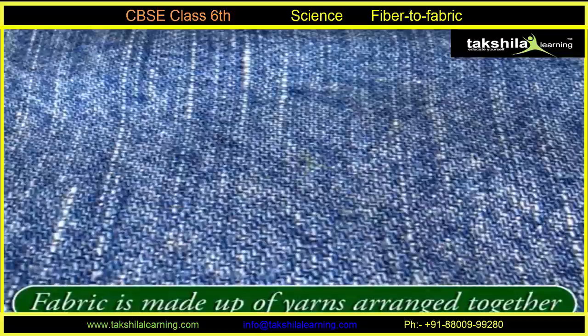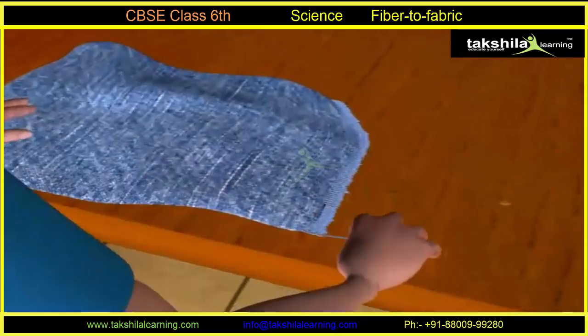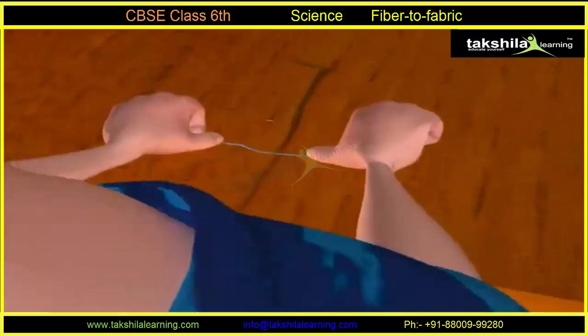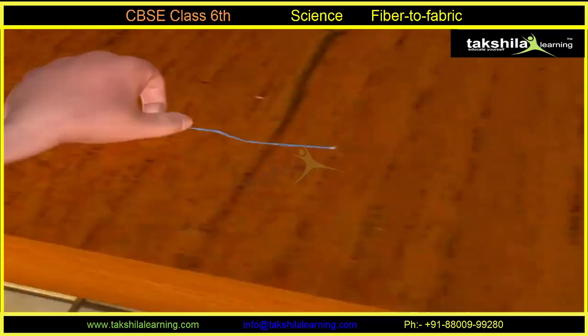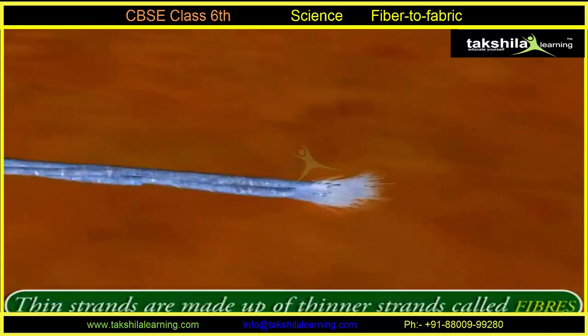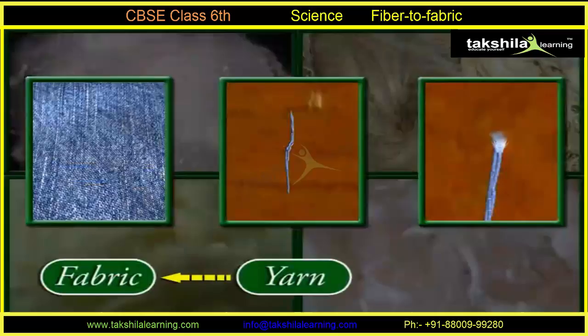That thread which was made of fibers is called yarn. Now take out a yarn from a torn or cut piece of cotton fabric, place it on a table, and press one end of the yarn with your thumb. Scratch the other end of the yarn along its length with the help of your nail. You will find that the yarn splits up into thin strands. These thin strands are made up of thinner strands called fibers. Now you know that fabrics are made up of yarns, and yarns are further made up of fibers.